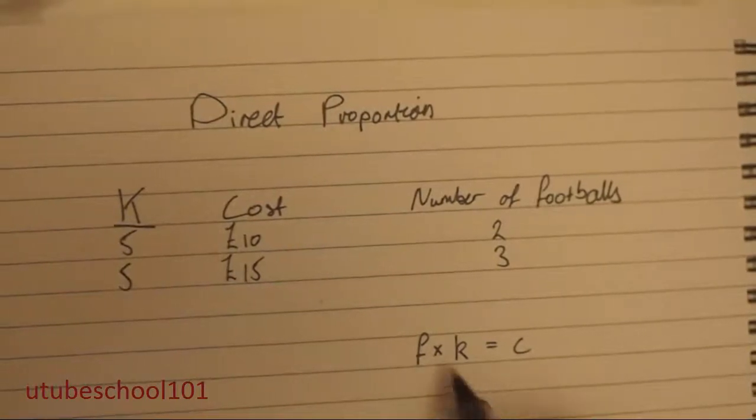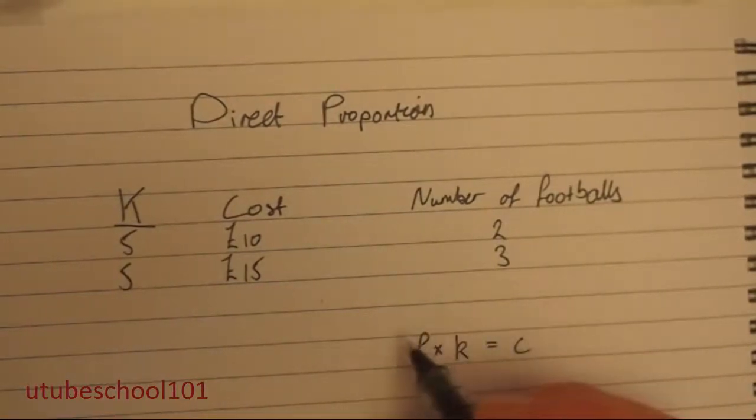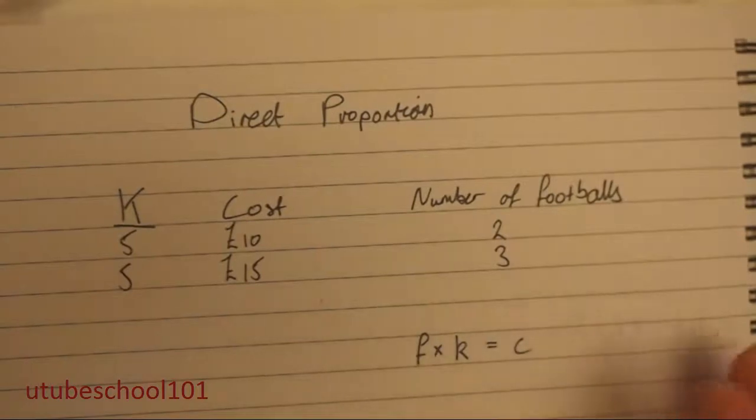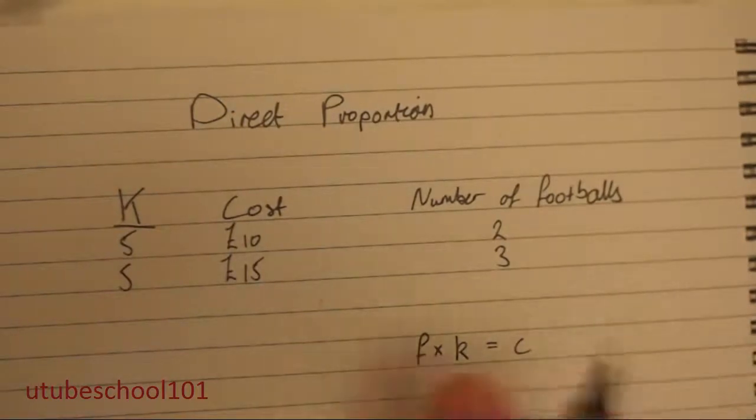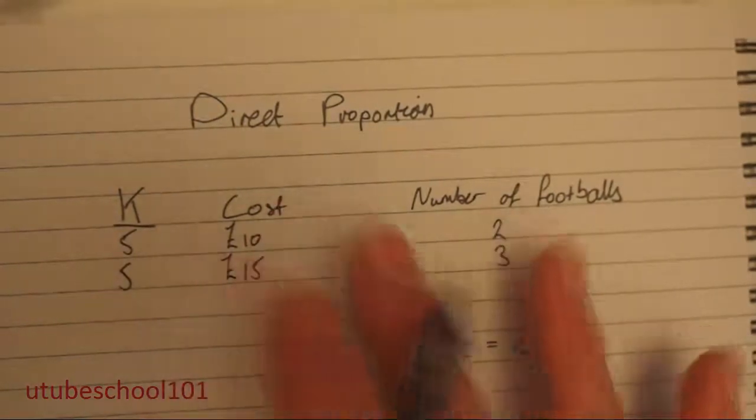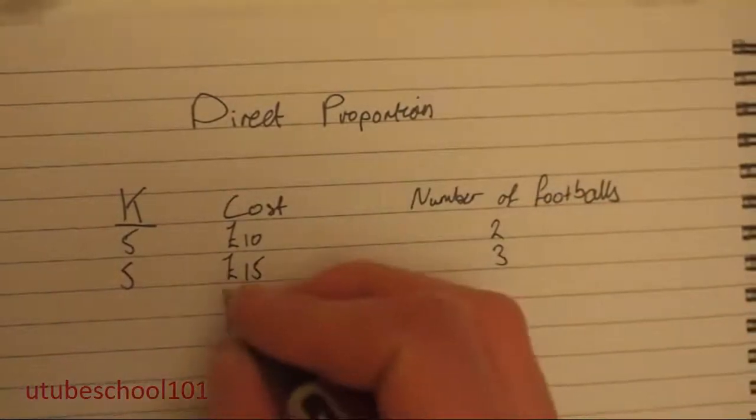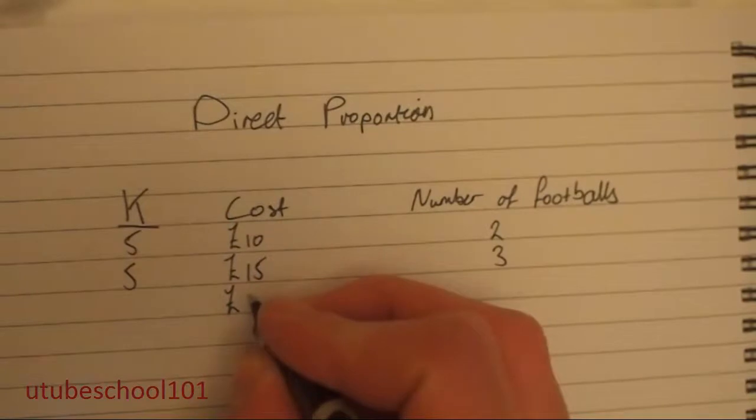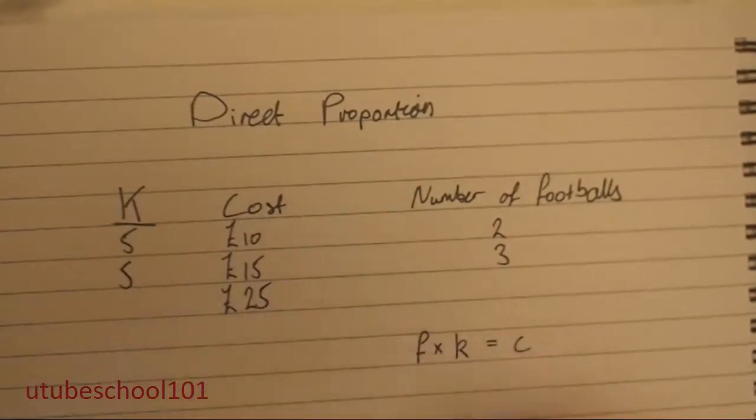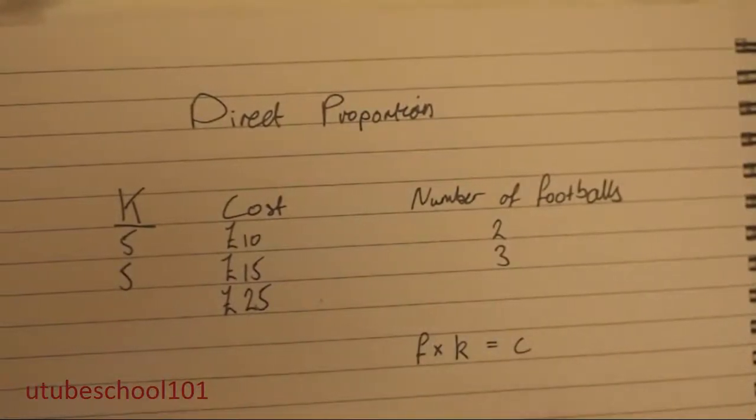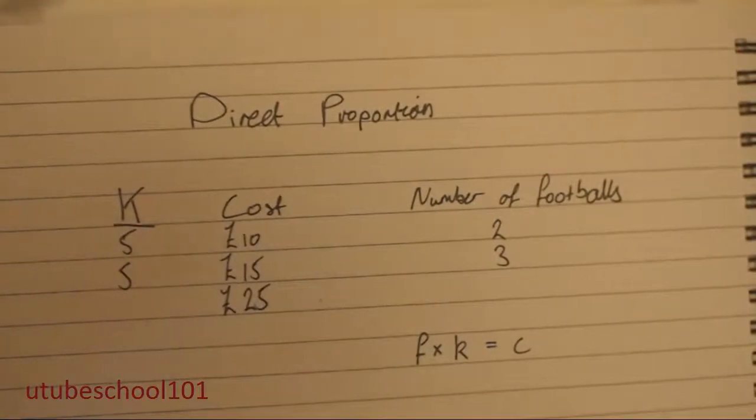And you can use this equation. This equation only works when both values are in direct proportion, so as one goes up, the other will go up. So with that in mind, if this person has spent twenty-five pounds, how many footballs is he going to get?